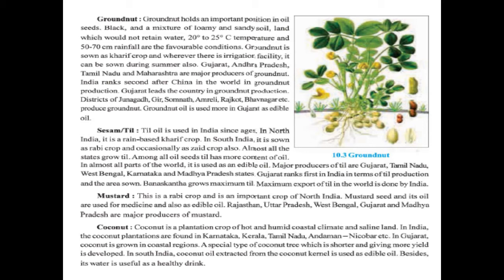The next is mustard, which is a rabi crop and an important crop of North India. Mustard seeds and its oil are used for medicine and also as edible oil. Rajasthan, Uttar Pradesh, West Bengal, Gujarat, and Madhya Pradesh are major producers of mustard.